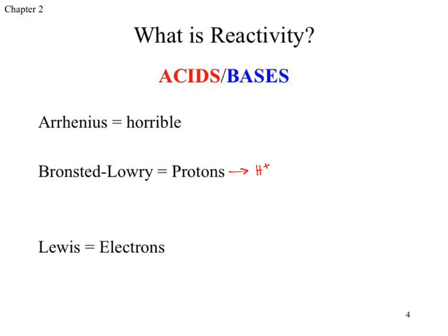So if we're looking at the transfer of an H⁺ in the course of a reaction: what species gives up an H⁺? Our Brønsted-Lowry acids. What species would accept an H⁺? A Brønsted-Lowry base. We'll typically refer to these as proton donors and proton acceptors.